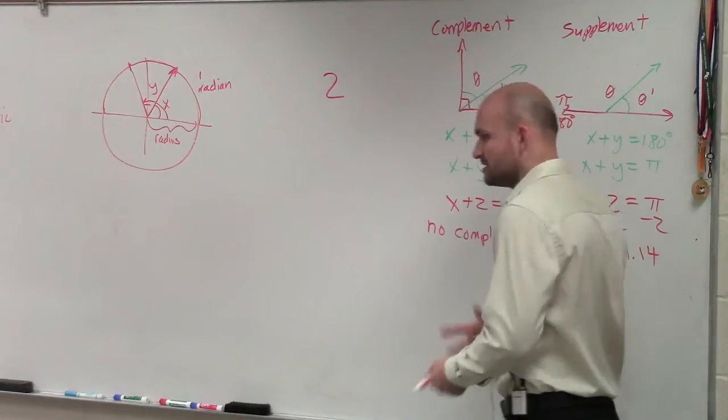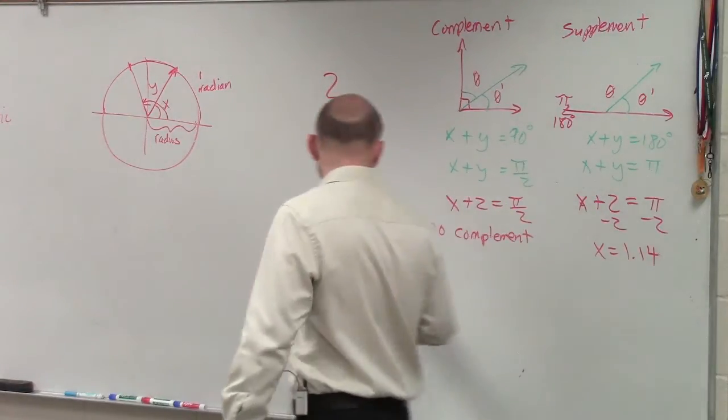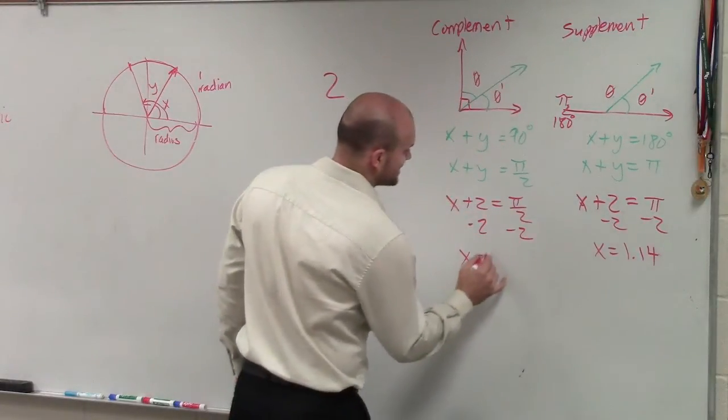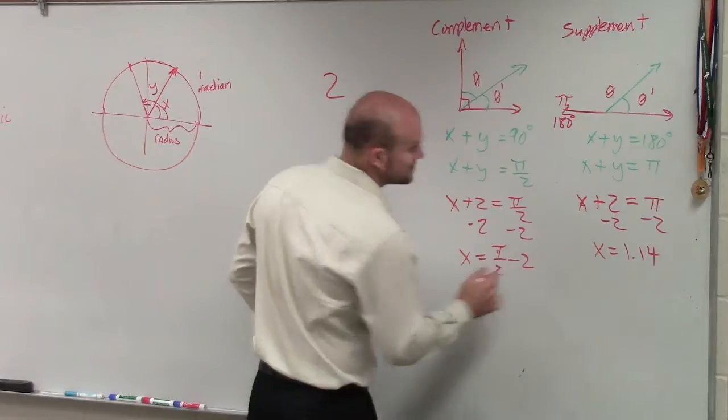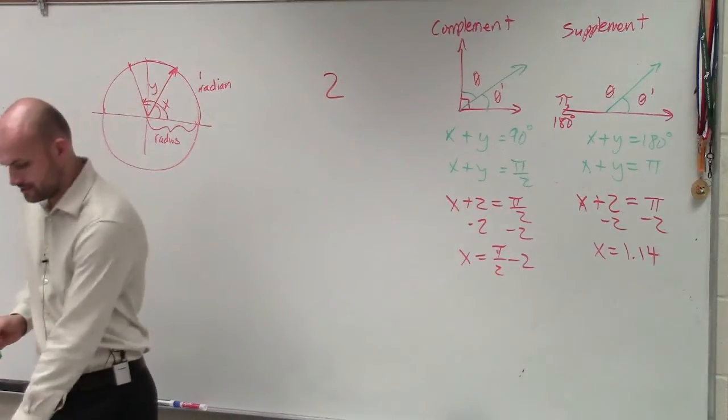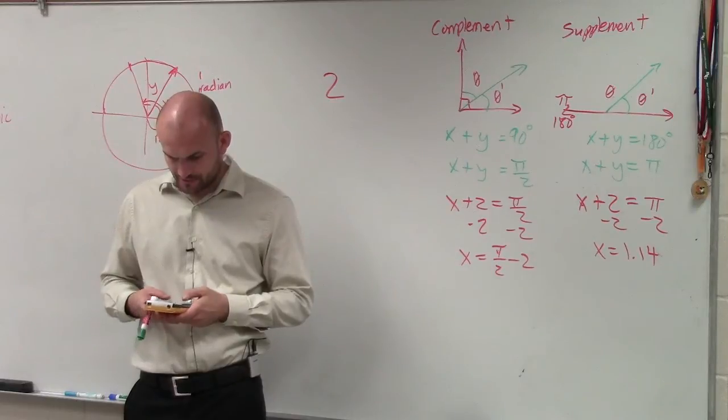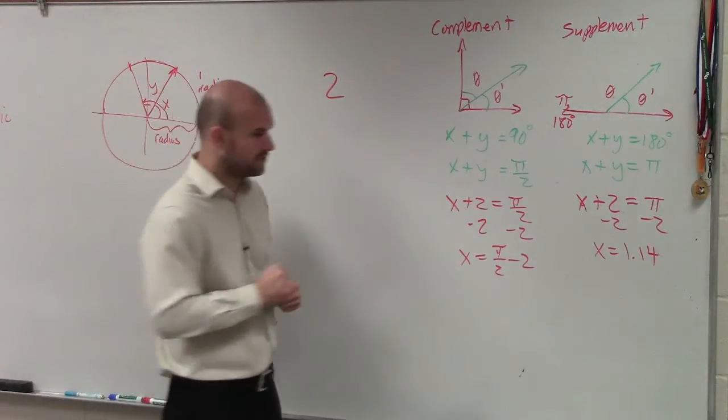Let's solve this. Forget I explained it doesn't have a complement. Let's solve. Minus 2, minus 2. x equals pi halves minus 2. Put that in your calculator. So if you do pi divided by 2 minus 2, you get negative 0.43.